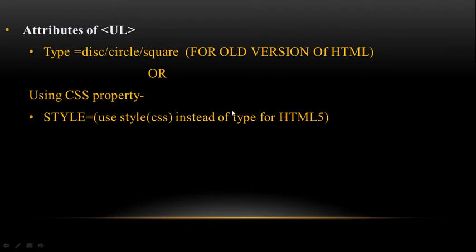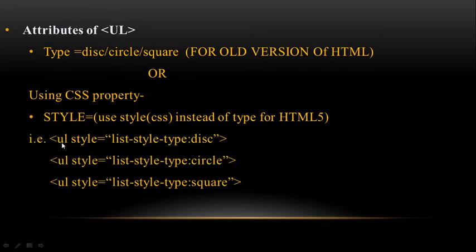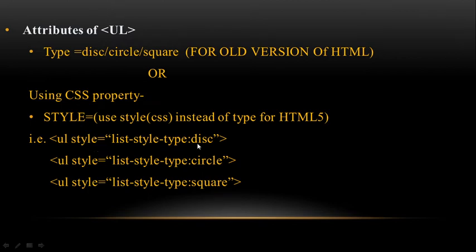Instead of the type attribute, we use the style attribute with the UL tag. The syntax is: UL tag, then the attribute style equals, then in double quotes write the property and value. Property and value are separated by a colon. The property is list-style-type, then colon, and the value can be disk, circle, or square. You may use any one of these for the style attribute.